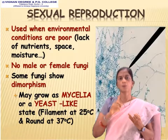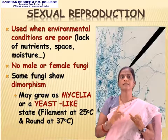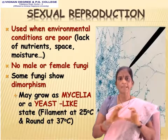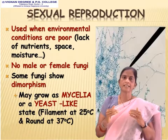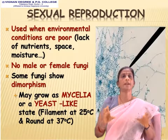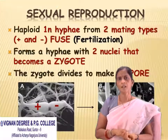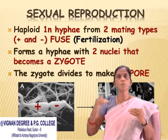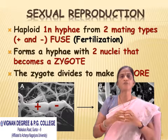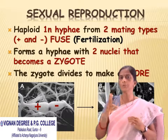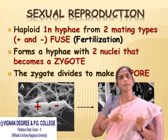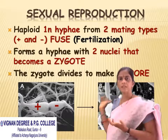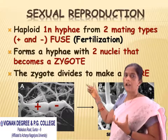There is no distinct female or male fungi. Some fungi show dimorphism — they may grow as mycelium or yeast at 25°C and as filamentary shape at 37°C. Haploid hyphae from two mating types, plus and minus, fuse for fertilization to form hyphae with two nuclei that become a zygote.